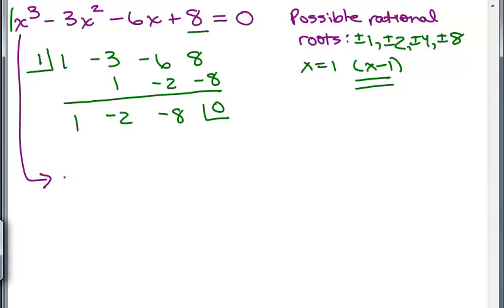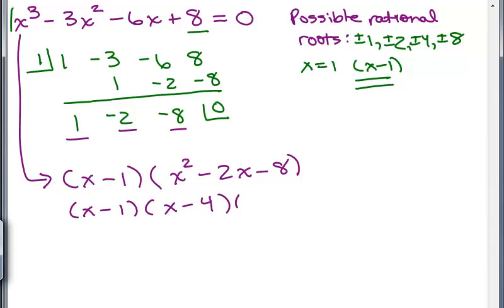So this problem now is X minus one times the coefficients of the polynomial that's left, which is X squared minus 2X minus 8. And now this can be factored. So I have X minus one times X minus four times X plus two, and those are the factors we want.